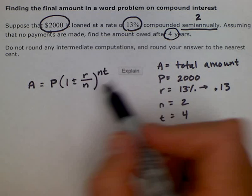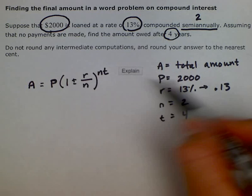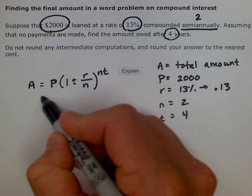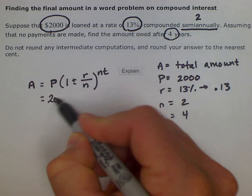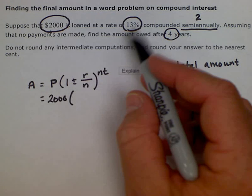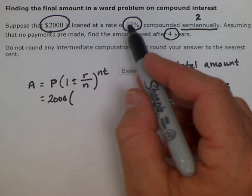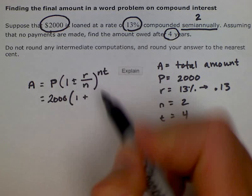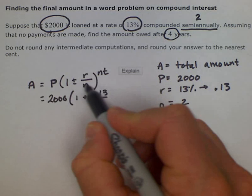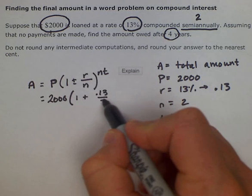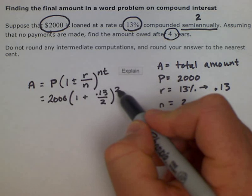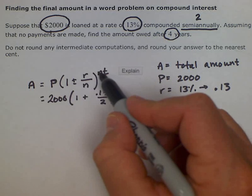We'll go ahead and fill in the variables here. This is equal to 2000, which was our initial amount, and it will be increasing because it will be charging us interest. So it's going to be one plus our rate, which is 0.13, over the number of times it's compounded, which is twice a year semi-annually. And then raised to 2, compounded two times per year, times the number of years, which is 4.